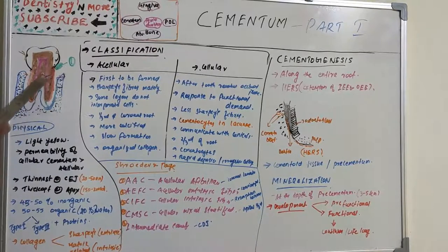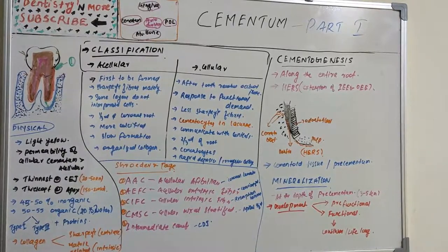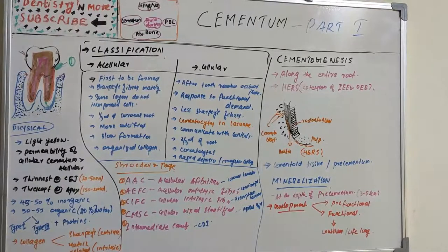Cementum continues to the apex, so it covers the root basically. Regarding physical properties, the hardness is comparatively lesser than dentine. It is light yellow in color and lighter in color than dentine; however, it may not be distinguished on the basis of color alone.